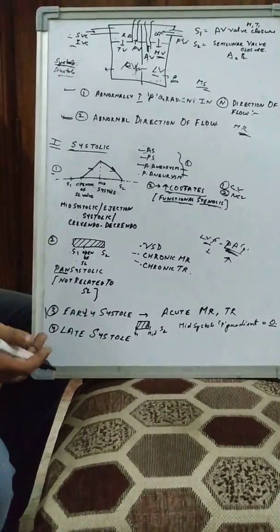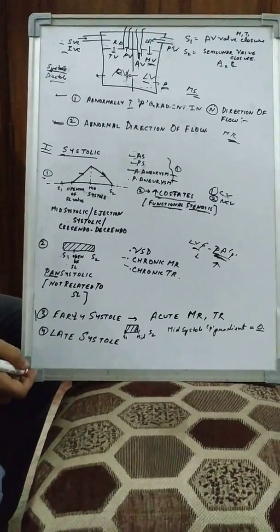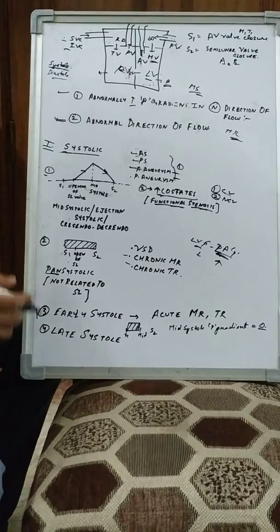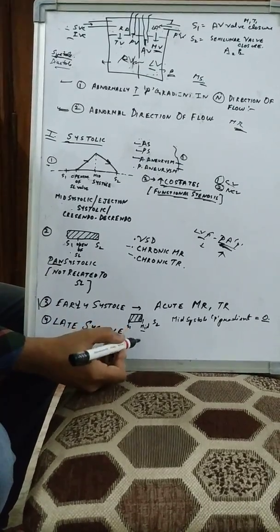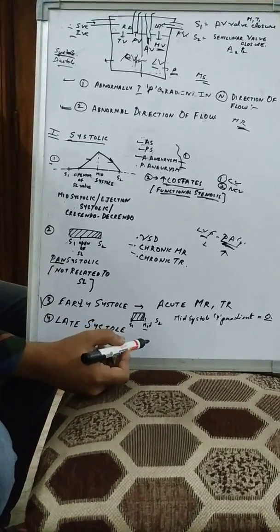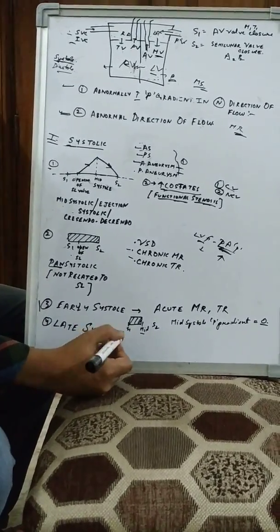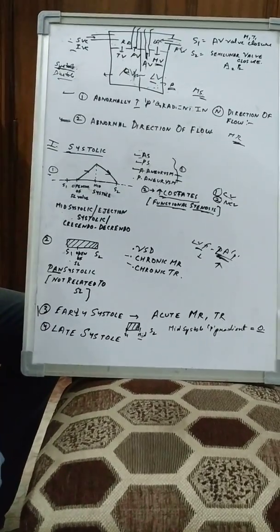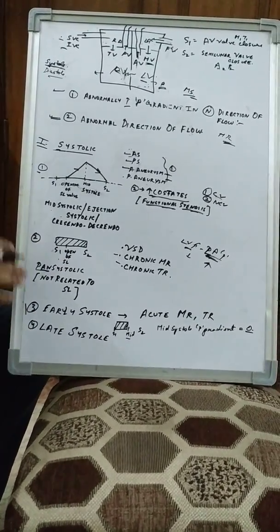For late systolic murmur, there is one key example: it occurs after mid-systole and ends just at S2. The example is mitral valve prolapse. Next, diastolic murmurs and continuous murmurs will be discussed.